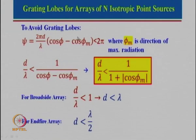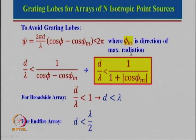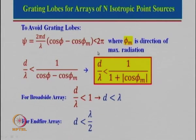We need to avoid grating lobes in all situations. We have seen that psi is given by a particular expression and this should be less than 2π, where phi_m is the direction of maximum radiation. To recall: if phi_m is equal to 0 degrees that will be an end-fire array, and when phi_m is equal to 90 degrees that will be a broadside array. The condition is that psi must always be less than 2π. If we simplify this, we can see that d/λ should always be less than a certain term.